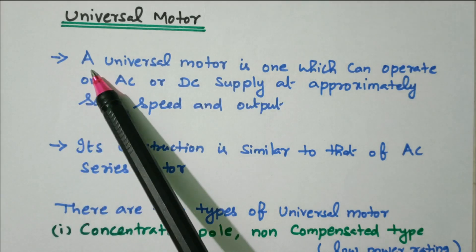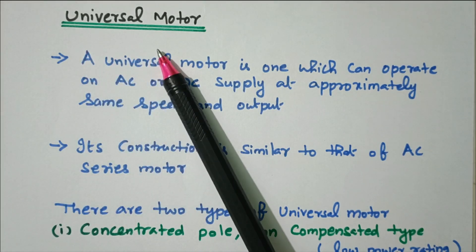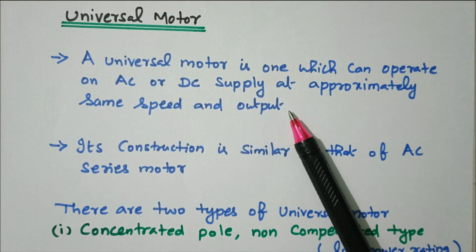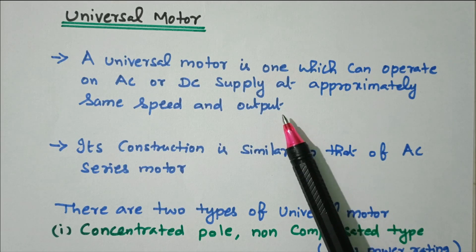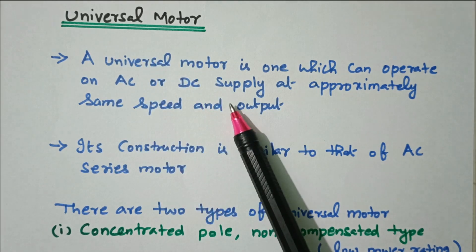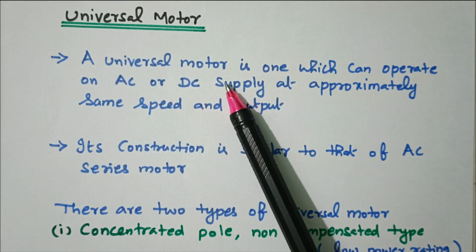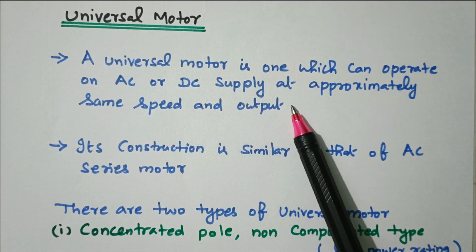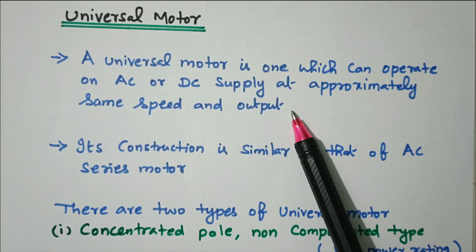Welcome viewers. In this video we'll see the construction and operation of the universal motor. The name itself says it all — the universal motor can be operated on AC as well as DC, that's why it is called a universal motor. The important feature of this motor is high speed.